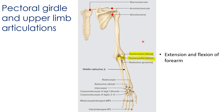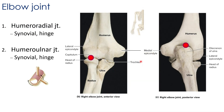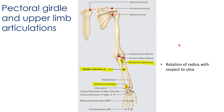The elbow consists of two joints: the humeral ulnar and the humeral radial. The humeral radial joint is an articulation between the capitulum of the humerus and the head of the radius, classified as a synovial hinge. The humeral ulnar joint is between the olecranon of the ulna and the olecranon fossa of the humerus, also classified as a synovial hinge. Both joints facilitate extension and flexion of the forearm.